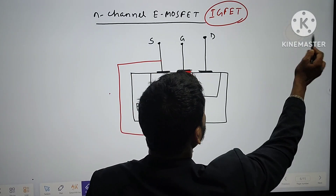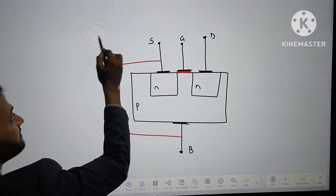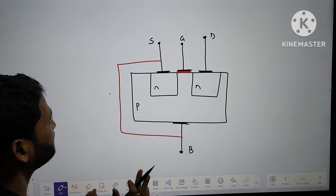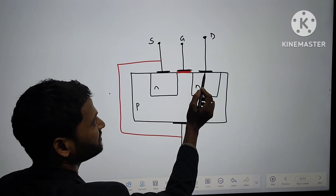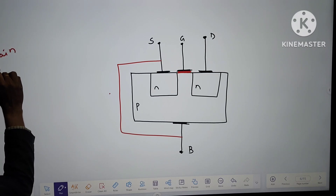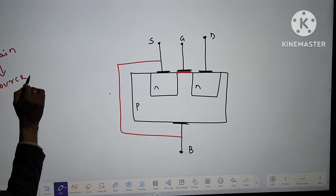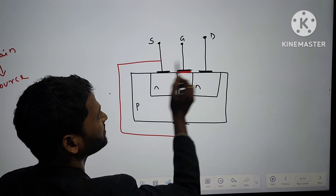Next point: what is the working principle? Our main objective is that current has to flow from drain to source. How will the current flow from drain to source?